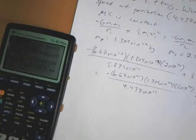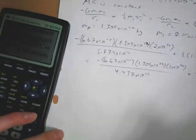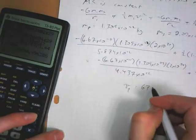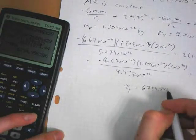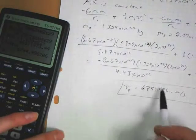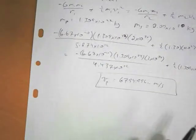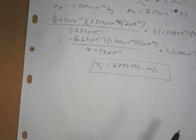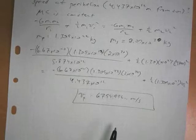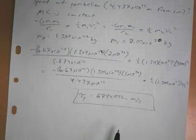And we get that its velocity at perihelion is 6794.996 meters per second, which makes sense, because that's more than its velocity at any other time. So we can do a conservation of energy like that. It's kind of annoying when you get into astronomical numbers with all these powers of 10, but we can work it out.